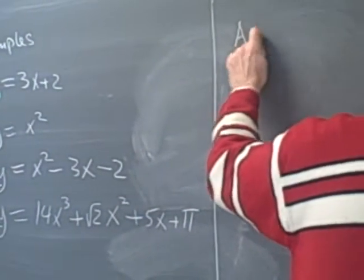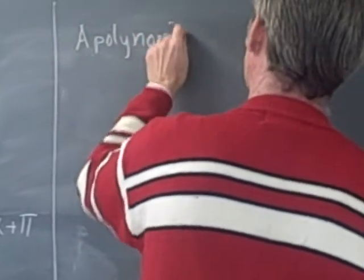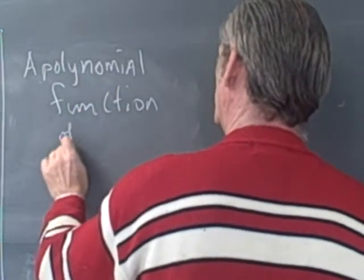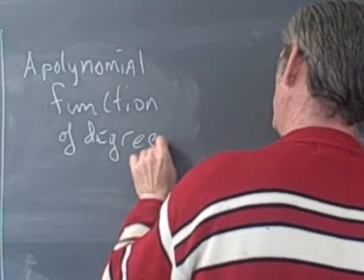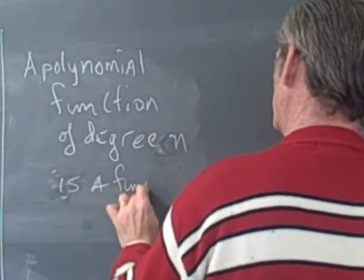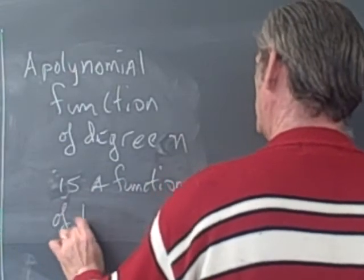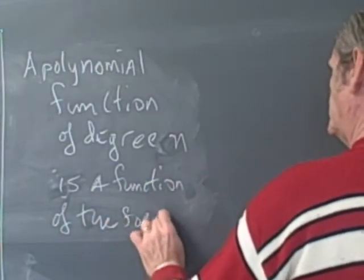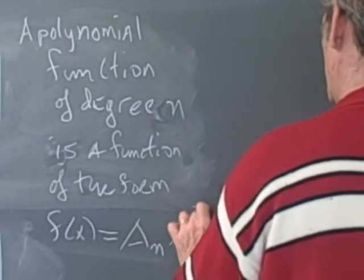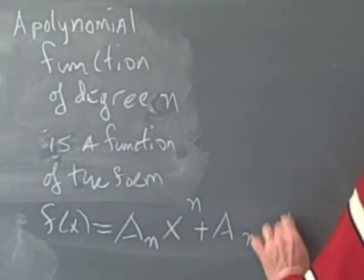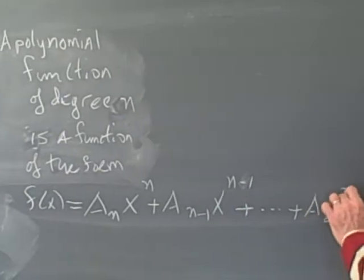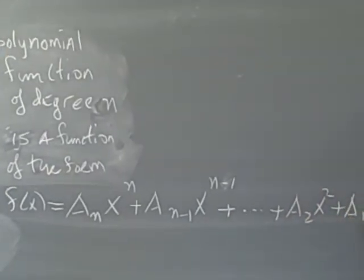a polynomial function of degree n is a function of the form f of x is equal to a sub n x to the n plus a sub n minus 1 x to the n minus 1 plus and so forth plus a2x squared plus a1x plus a0.